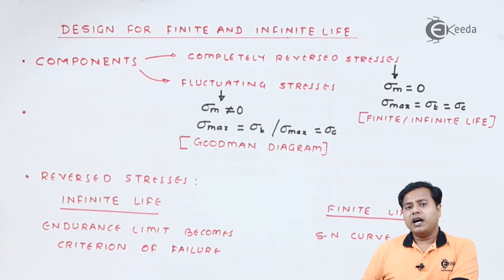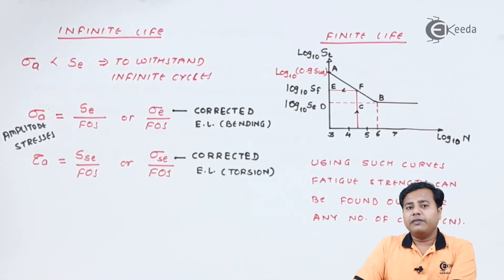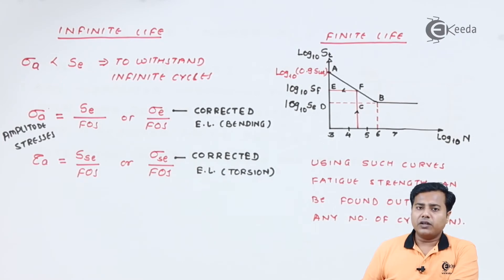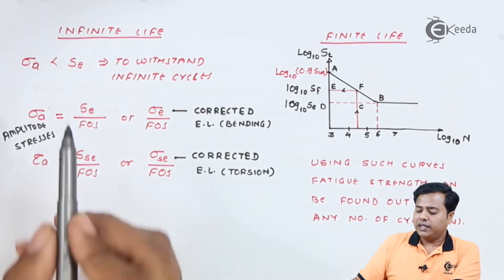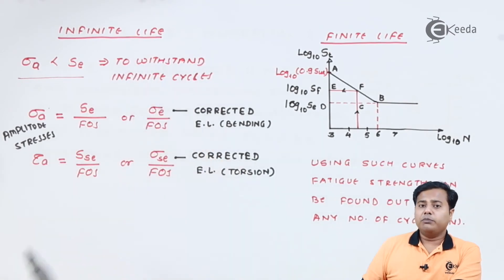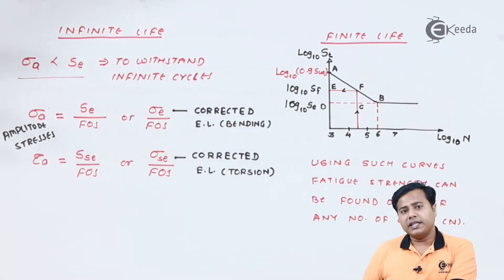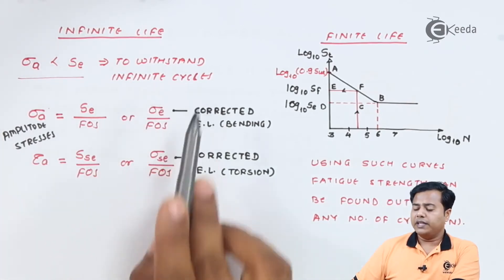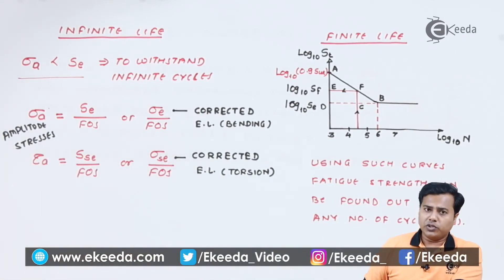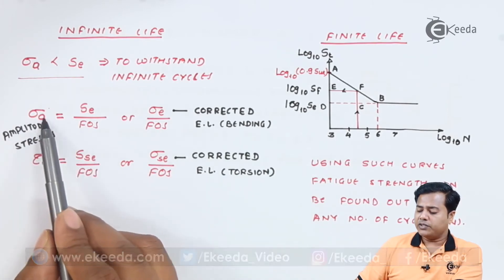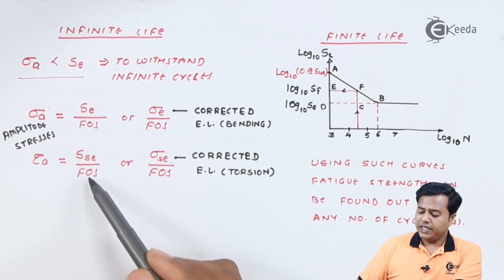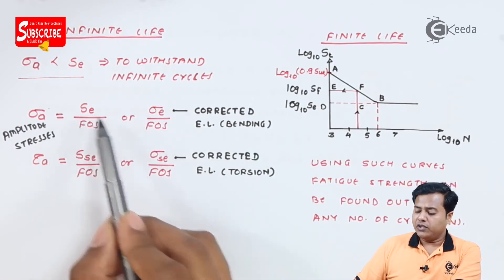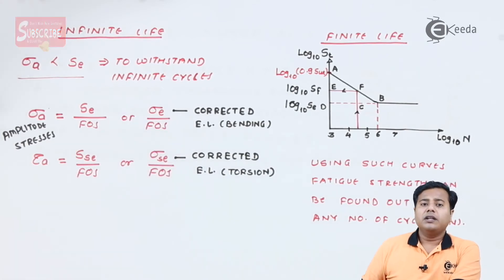In the next slide, we will see how they are used in actual practice. For infinite life, the endurance limit is the failure criteria. The amplitude stress or maximum stress we are going to use should be smaller than the endurance limit — that is the basic criteria so that the component will withstand an infinite number of cycles. There are two important relations used: amplitude stresses in bending or torsion are given by the endurance limit divided by the factor of safety. We can use either notation SE or sigma E, both representing the endurance limit stress, which is the corrected value after considering certain factors.